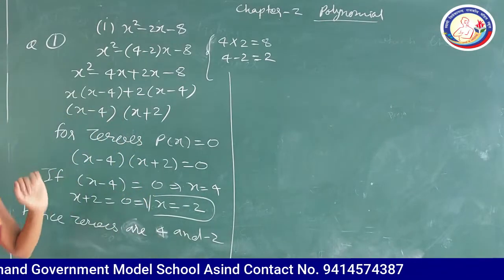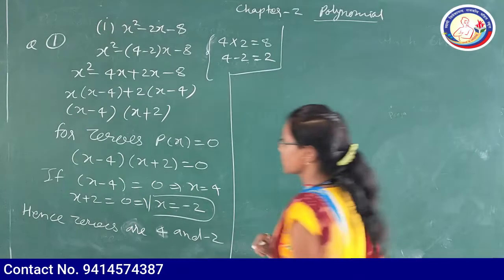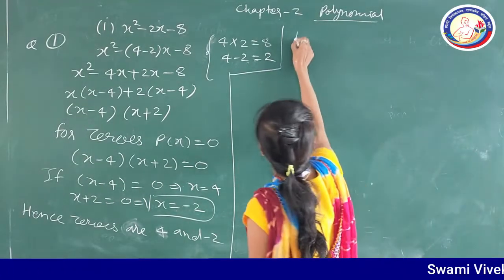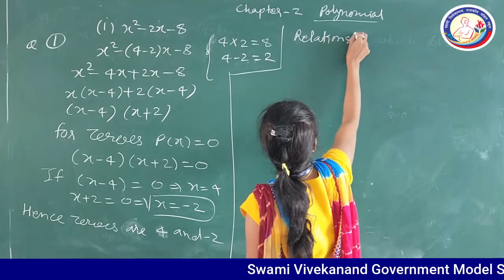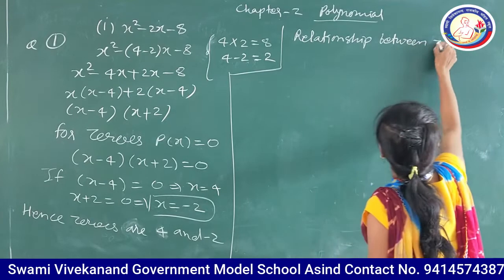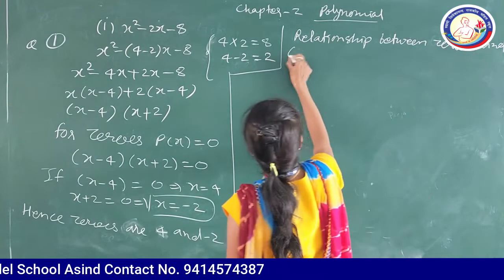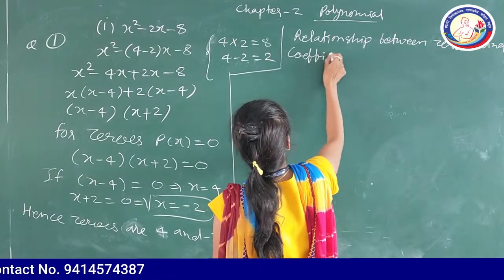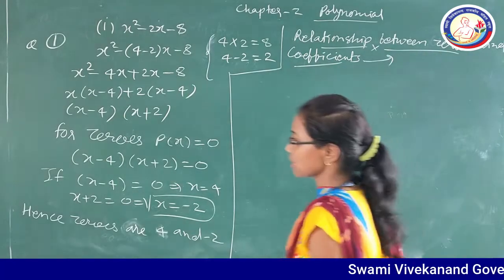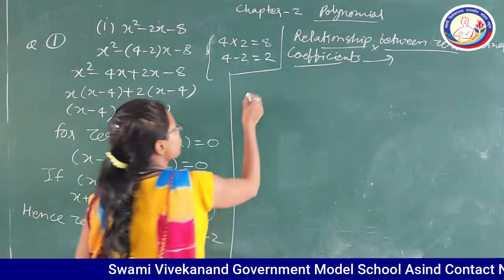This was the first part. For the second part, we need to prove the relation between zeros and coefficients. First we calculate the values, then we verify using the relation formula. So let us find the sum of zeros.